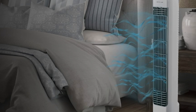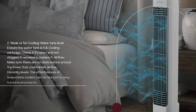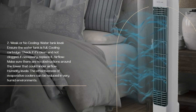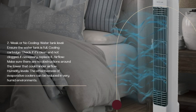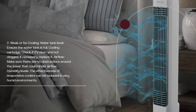2. Weak or no cooling. Check the water tank level — ensure the water tank is full. Inspect the cooling cartridge to see if it's clean and not clogged; if necessary, replace it. Make sure there are no obstructions around the tower that could hinder airflow. Note that the effectiveness of evaporative coolers can be reduced in very humid environments.